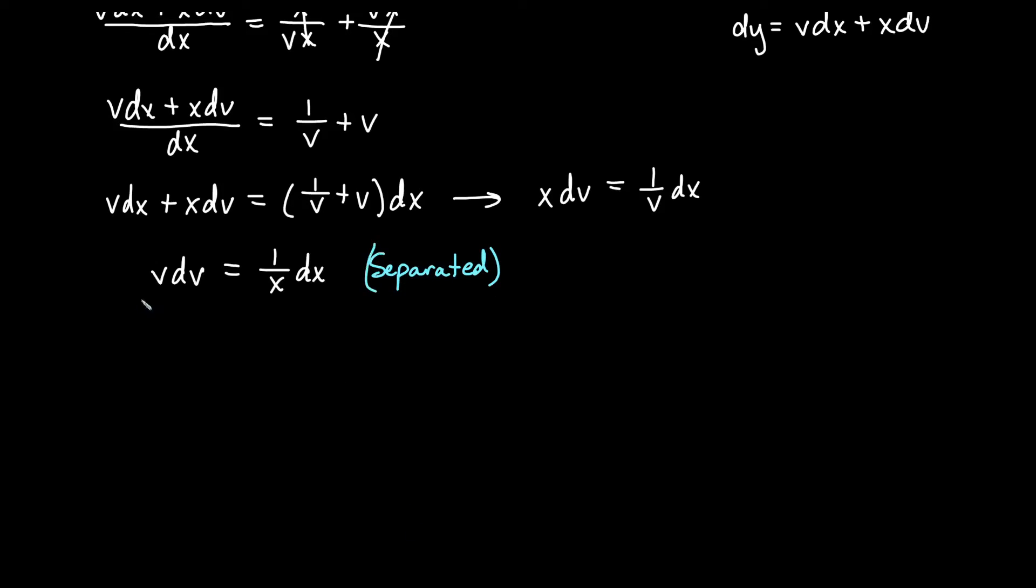And once we have our variables separated, we can simply integrate both sides as we would with a separable equation. So the antiderivative of vdv is going to be 1/2 v squared, technically plus c. I'll save that for the other side. Antiderivative of 1/x dx would be ln of x. We'll put our constant of integration on the right side here. So now I have 1/2 v squared equals ln of x plus c. Let's go ahead and get rid of the 2. So we'll say that v squared is equal, multiplying by 2 would give us 2 ln of x plus, we could technically say 2 times c, let's just call it another c instead.